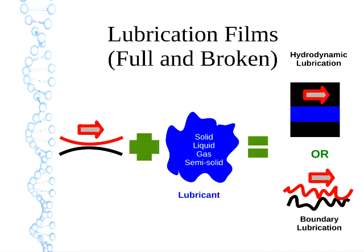Moving to lubrication: with lubricant films you can have full film lubrication or broken films where asperities poke through. Adding a lubricant — which can be solid, liquid, gas, or semi-solid — to sliding surfaces produces either hydrodynamic or boundary lubrication, corresponding to the two friction types discussed earlier. You can also be somewhere in between these two extremes.